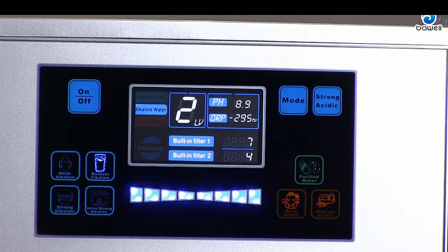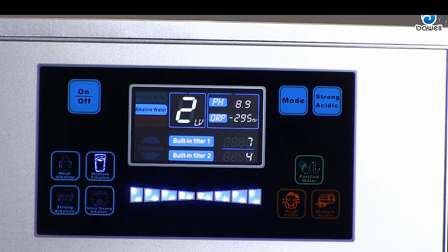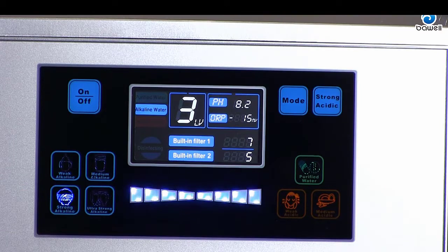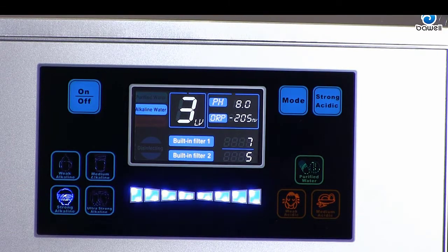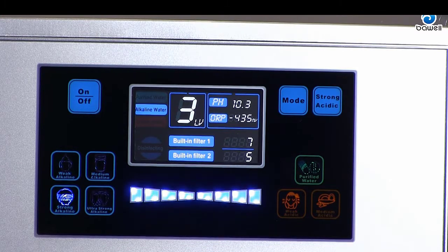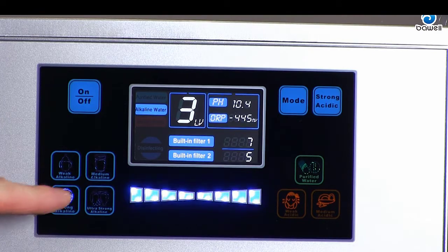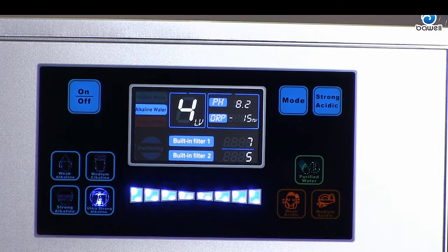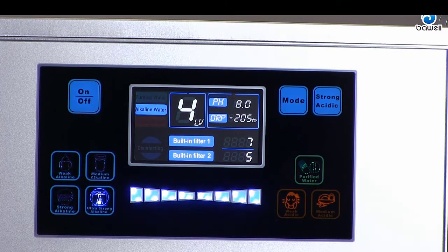With the display features on the water ionizer, it is easier than ever to choose the exact pH or ORP of your water. With just the press of a button, you can have the perfect water for any situation. The two filters provide 1,320 gallons of filtered alkalized water between filter changes. With the lifetime warranty provided, you can enjoy your new water ionizer with peace of mind.